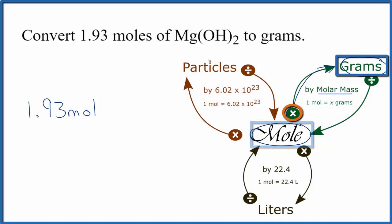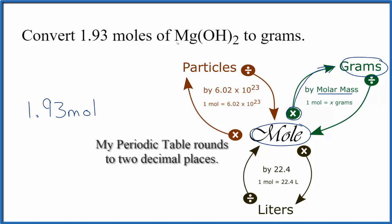That'll give us grams. To find the molar mass, we go to the periodic table and add the masses up for each one of the elements here in Mg(OH)2. That gives us 58.33 grams per mole.